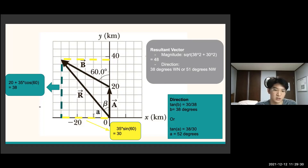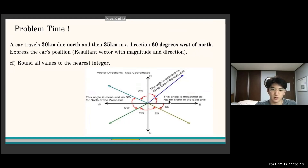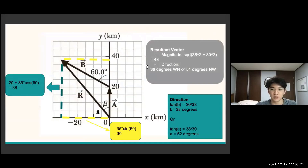For the direction, you can use the inverse tangent. Tangent of beta equals 30 over 38, so beta is approximately 38 degrees — expressed as 38 degrees west of north. Alternatively, tangent of alpha equals 38 over 30, giving alpha approximately 52 degrees north of west. Both are valid ways to express the vector's direction. Remember: when a question asks you to express a resultant vector, you must include both magnitude and direction, since that is the definition of a vector.